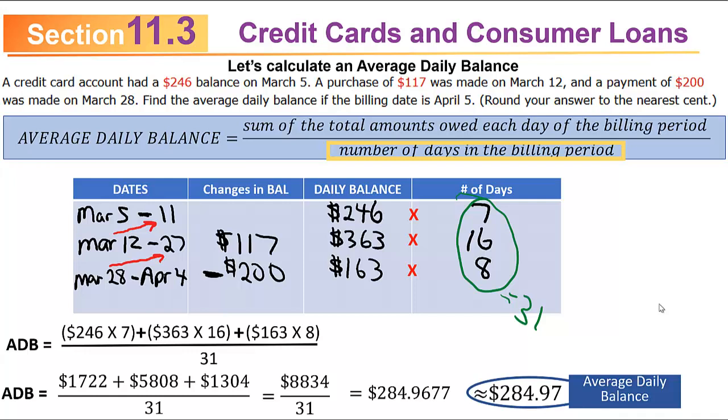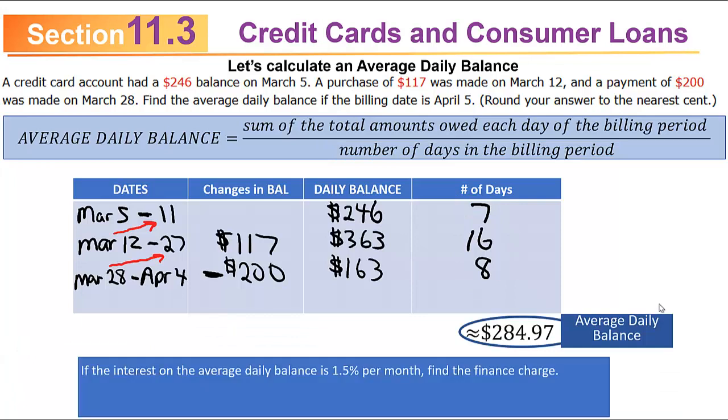You have to be careful setting up the chart — otherwise it's a simple arithmetic problem. As a follow-up question: if the interest on the average daily balance is 1.5% per month, what is the finance charge? Once you have the average daily balance, multiply it by 1.5% converted to a decimal, which is 0.015. Multiplying $284.97 × 0.015 gives $4.27. So for that month, the finance charge would be $4.27.